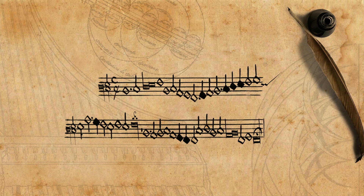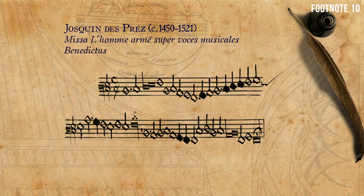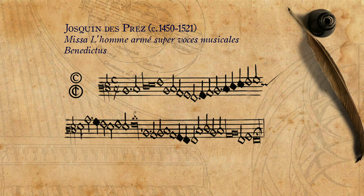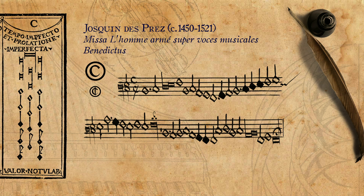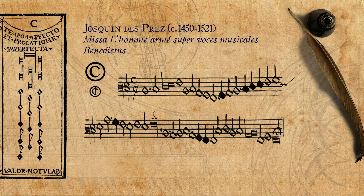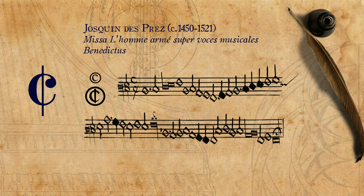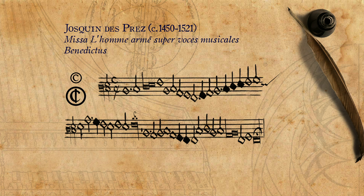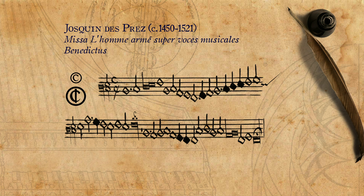By applying different mensurations and proportions to a single clever melody, different parts are created. This was called a mensural canon. For example, this is a little duet from Josquin's Missa L'homme armé Super Voces Musicales, a mass full of such mensural tricks. You see that there is only one part but two mensural signs. The upper one: imperfect tempus with imperfect prolatio — the mensural sign later named common time. The lower one is the same but with a stroke through it, which was later called alla breve. In this specific context, the stroke means that all the note values are diminished by half. So by composing one line of music, there are in fact two voices — one sung as it is, and one that is twice as fast.